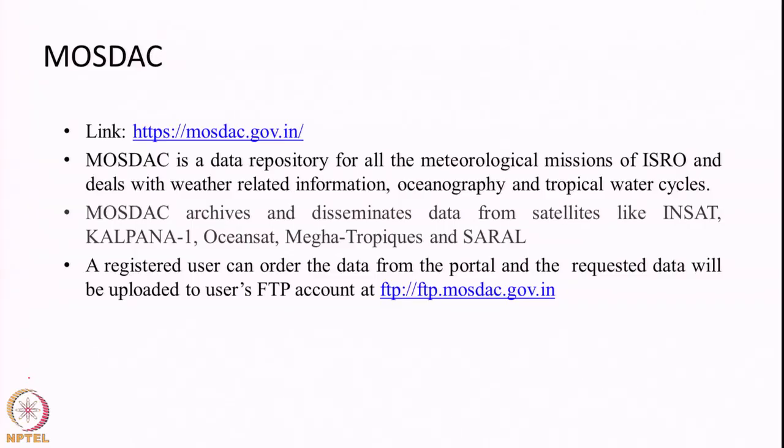The next data portal is MOSDAC — the data repository created by ISRO, but focused on meteorological missions. It mostly contains data from satellites dealing with meteorological applications, oceanography, and tropical water cycles. MOSDAC archives and disseminates data from satellites such as INSAT, Kalpana-1 (geostationary satellites), OceanSat, Megha-Tropiques, and SARAL. The data is primarily available from ISRO's Space Application Centre, whereas Bhuvan was from the National Remote Sensing Centre — both are different arms of ISRO with different specializations.